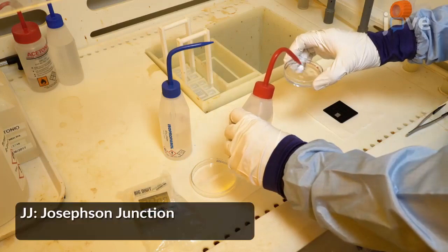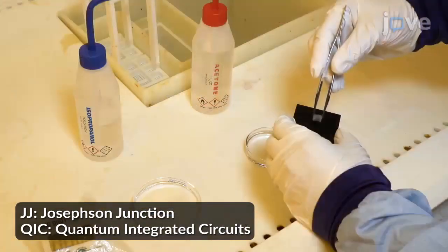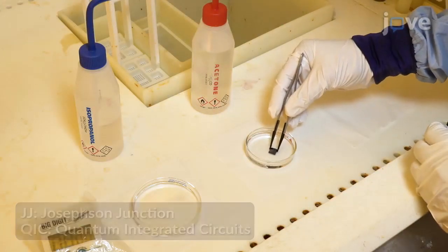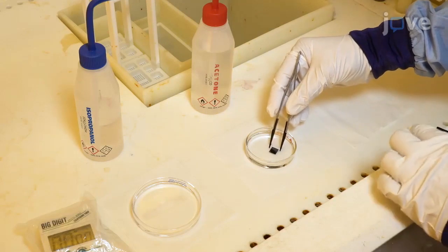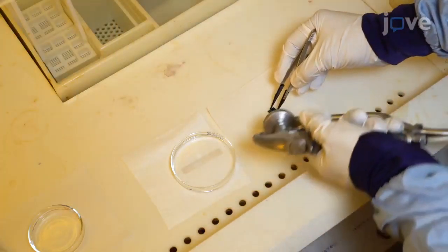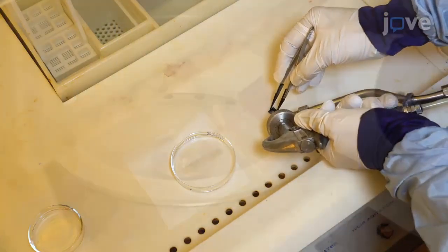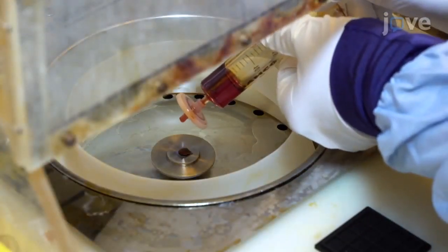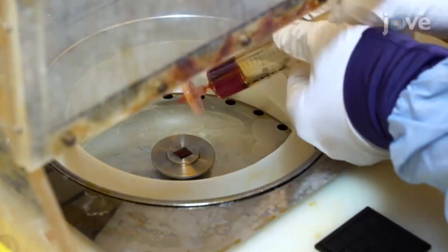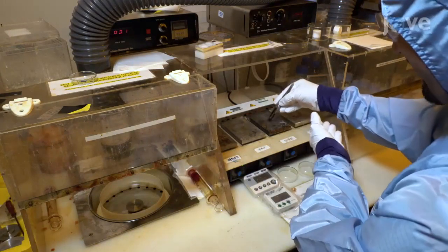To design the Josephson junctions and quantum integrated circuit device layout, first clean an indium-gallium arsenide wafer with acetone and isopropyl alcohol. Then dry the device with nitrogen gas. Spin the photoresist on top of the indium-gallium arsenide wafer. Bake the device on a hot plate for a few seconds.